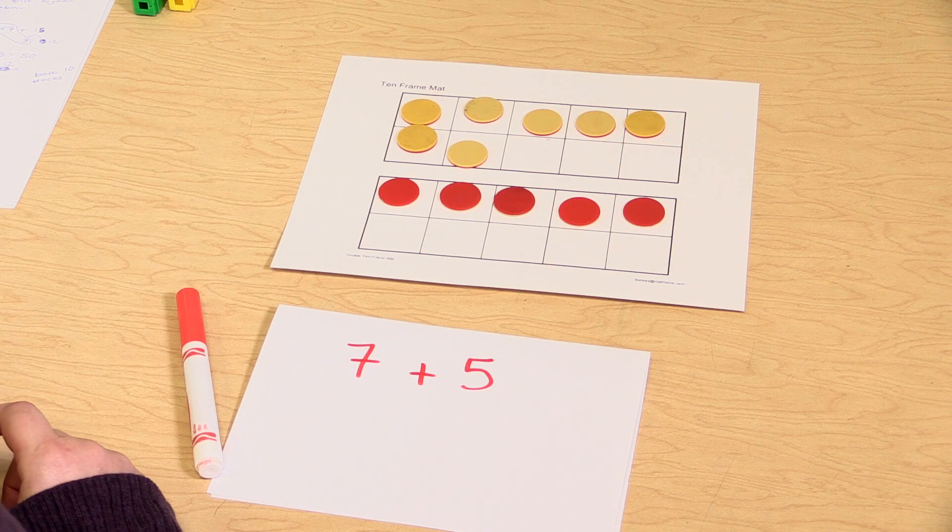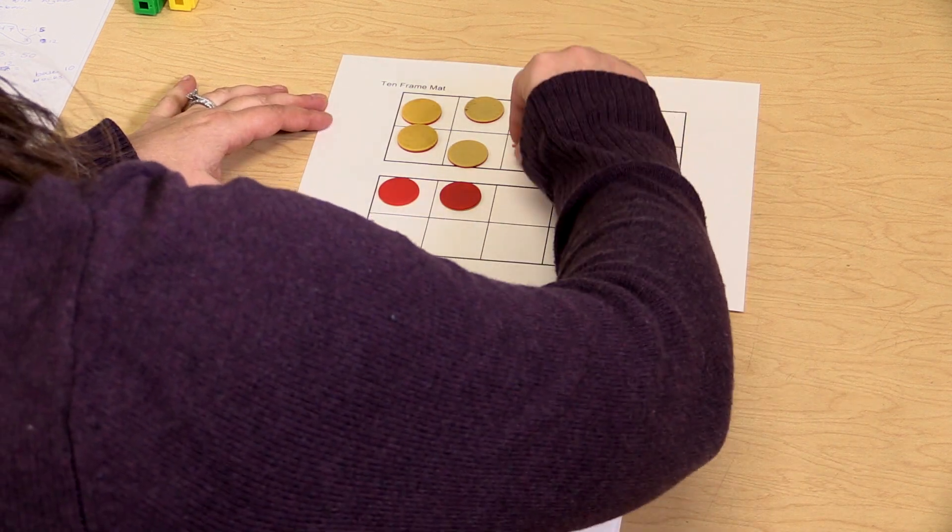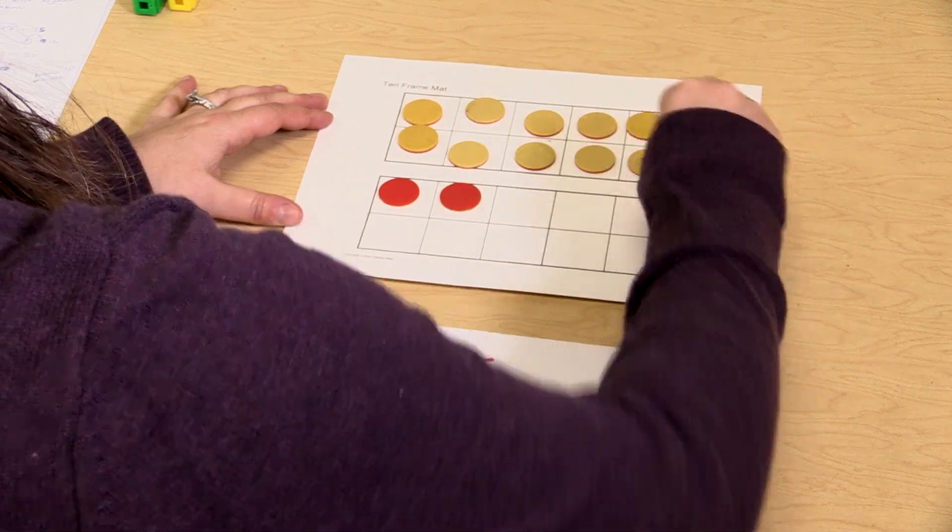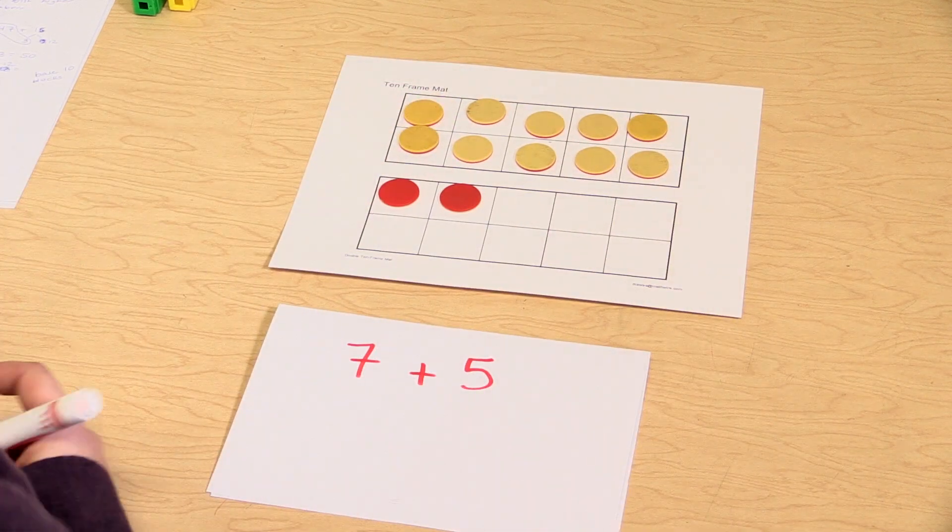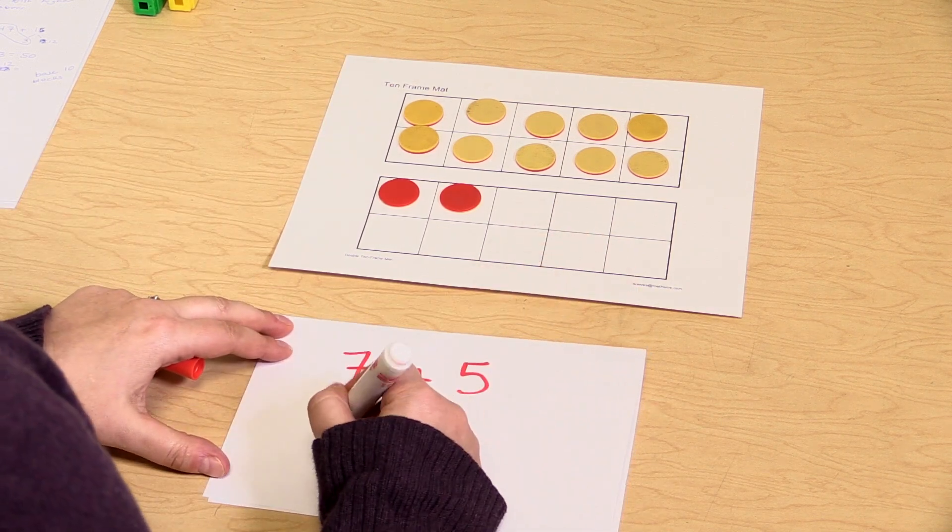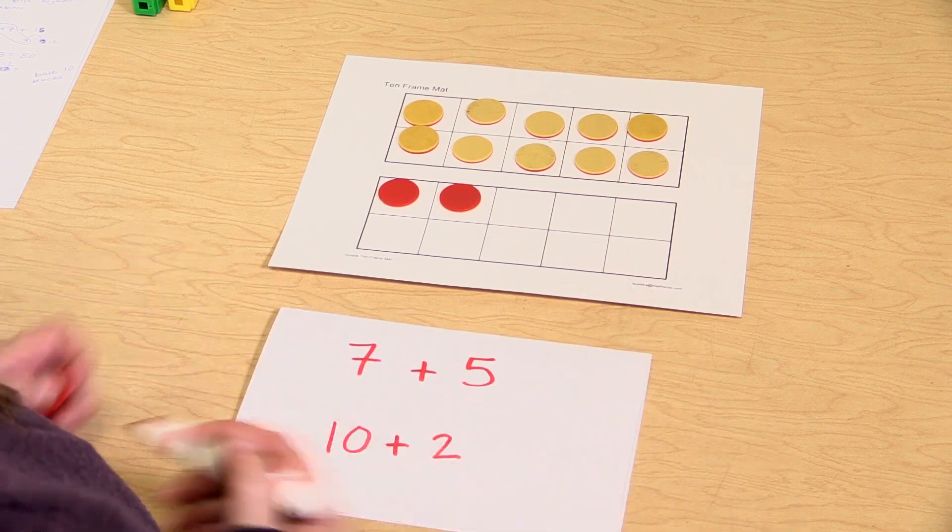An easier way to add seven plus five would be to make a ten. So they would slide up three chips, and now they would turn their problem into ten plus two, which equals twelve.